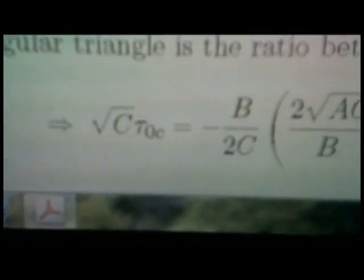And since the tangent of an angle in a rectangular triangle is the ratio between the opposite and the adjacent, that equation holds and we can get from that square root c times tau 0 c is equal to minus b over 2 c times in brackets 2 square root a c over b.